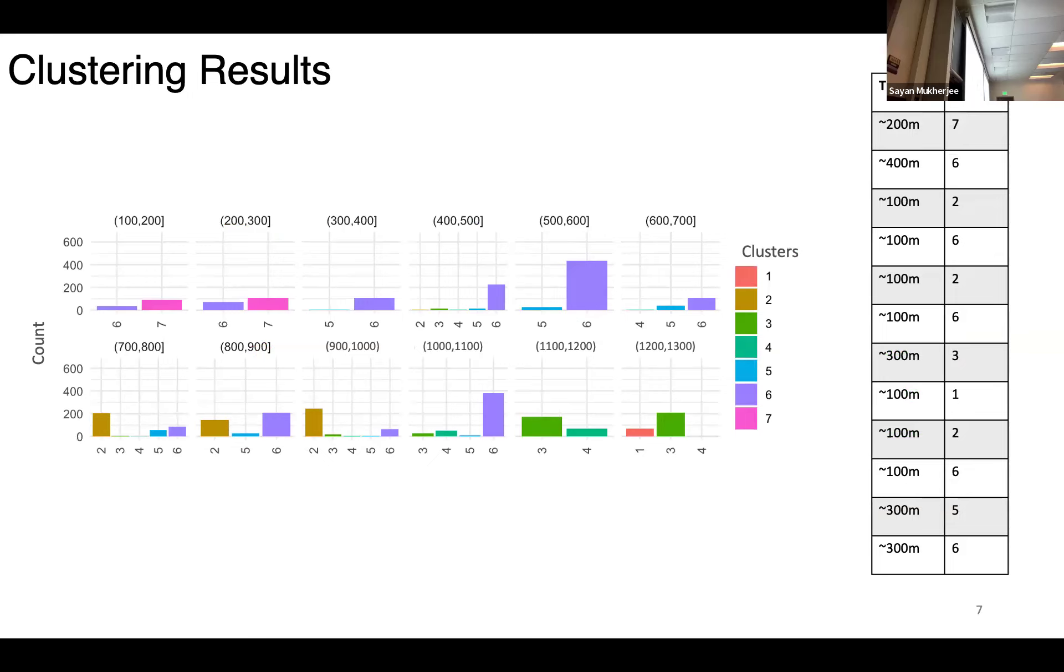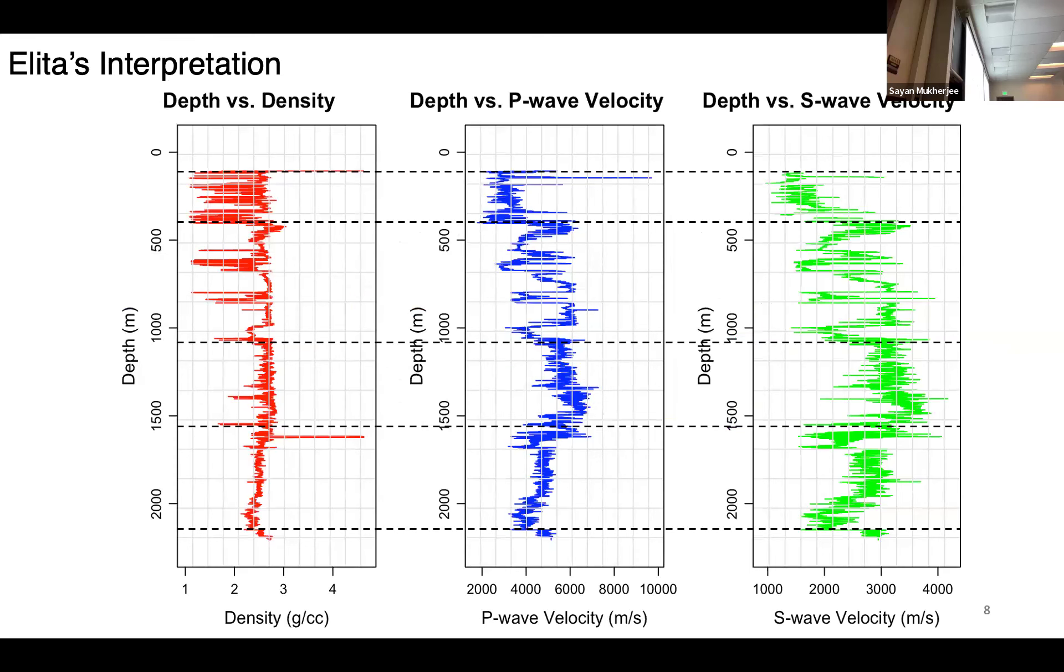What we do is we segment these depths and see which cluster dominates which depth. For example, if we see here, cluster 7 is dominating from a depth of 100 meters to 200 meters. When we analyze this entire thing, we get this rough thickness of which cluster has what kind of thickness. For example, we see that cluster 7 has a thickness of around 200 meters.